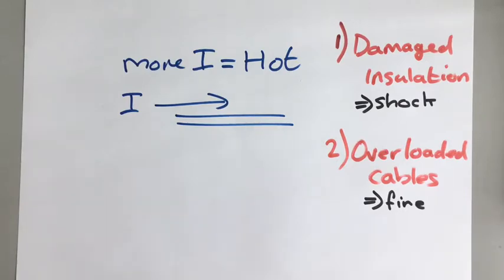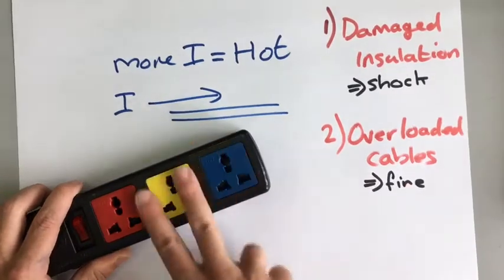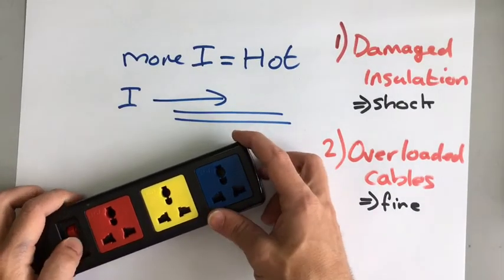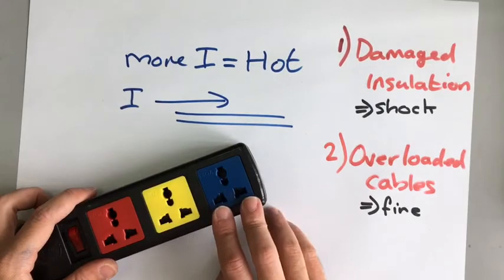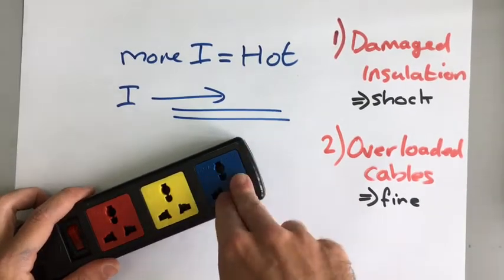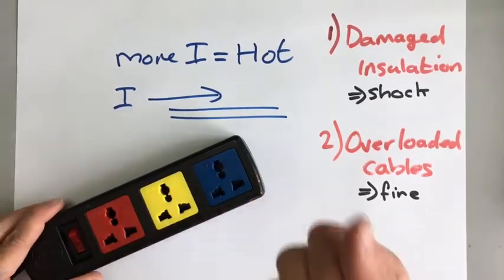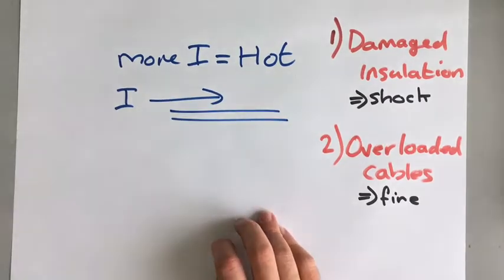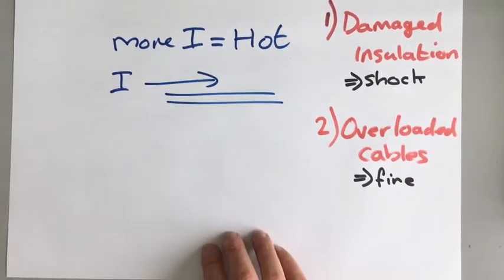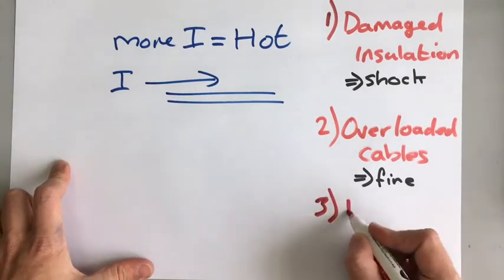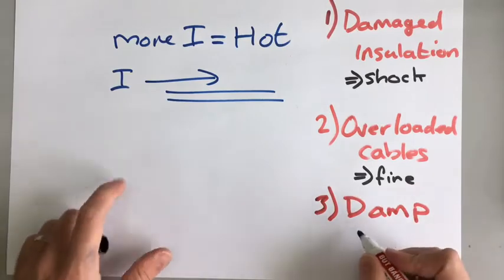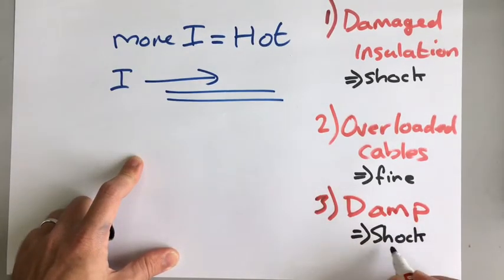The other thing that you have to be aware of is when you have a socket you don't want water around the socket. The reason for that is water has ions in it and impure water like the stuff that we get from the tap conducts electricity. So if you have water around here the water could conduct electricity into your hand if you touched it and it could give you an electric shock. Alternatively the water could conduct electricity inside the circuit where it's not supposed to be conducted and cause a short circuit. So the third one that you need to be aware of is damp or water. The risk of damp is either an electric shock or a short circuit.